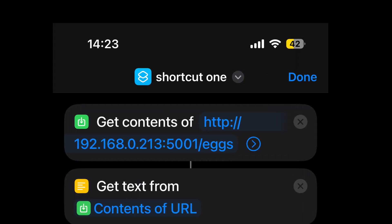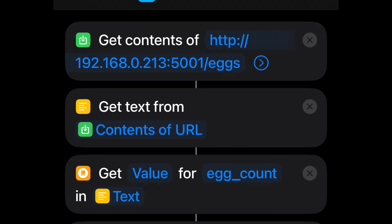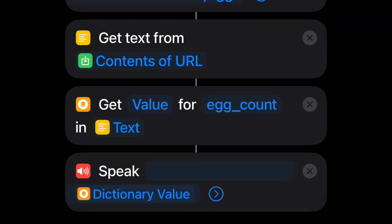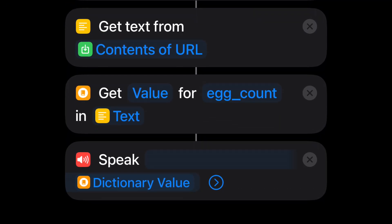At the beginning, I get text from this endpoint. Don't worry that it's HTTP, not HTTPS, because it runs only in local network, so it's not visible from the outside. After that, I parse eggCount key and pass its value to speak. In my case, to my HomePod.